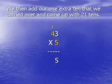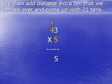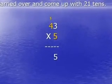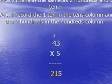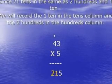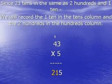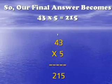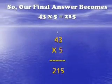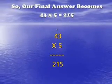Next, we add our one extra ten that we carried over and we come up with a total of 21 tens. 21 tens is the same as two hundreds and one ten. We will put the one ten in the tens column and the two hundreds in the hundreds column. So, our final answer is 43 times 5 equals 215.